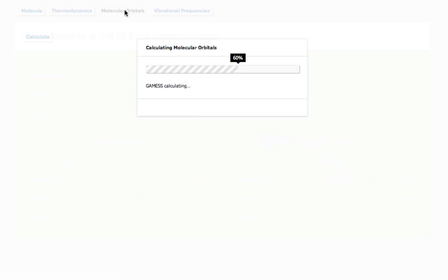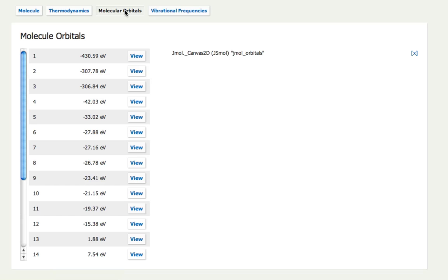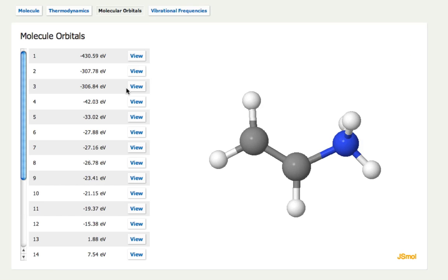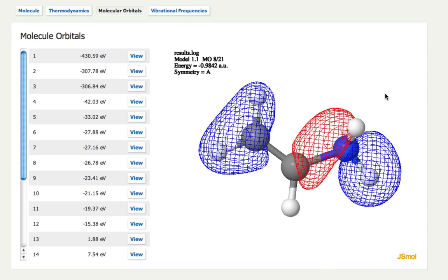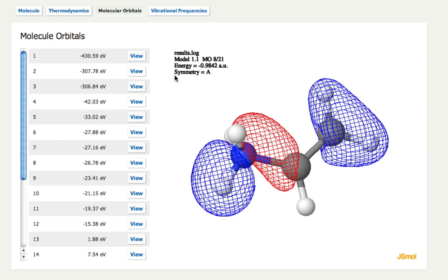I can also calculate molecular orbitals. So here, for example, they're ranked by orbital energy, so for example, I can view this one, which is an orbital spread over the molecule.